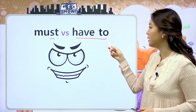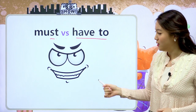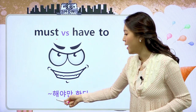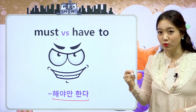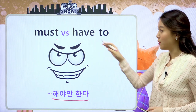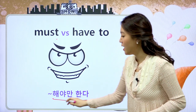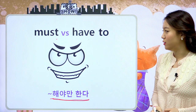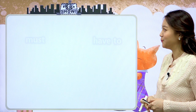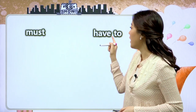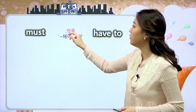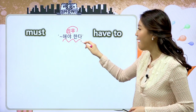must와 have to에 대해서 공부를 하게 될 거예요. 이 둘은 뜻은 같아요. 뭐뭐 해야만 한다. 우리 조금 전에 본 그림에서도 우리가 매일매일 꼭 해야만 하는 그림들이었죠. 그래서 must와 have to도 뭐뭐 해야만 한다라는 뜻을 가지고 있어요. 본격적으로 한번 그 공통점과 차이점에 대해서 파헤쳐 보도록 하겠습니다.